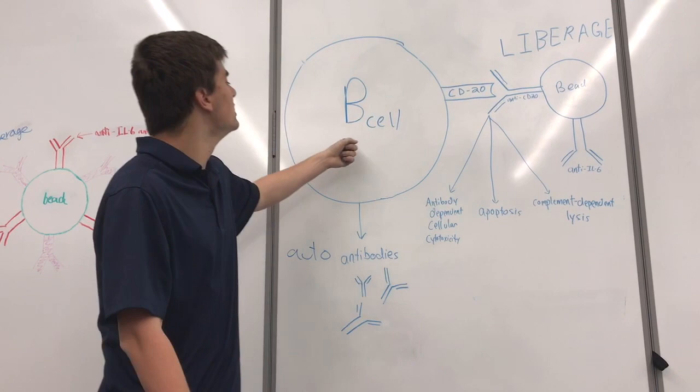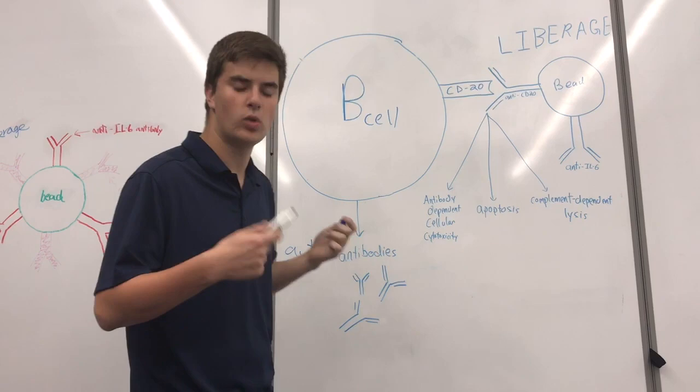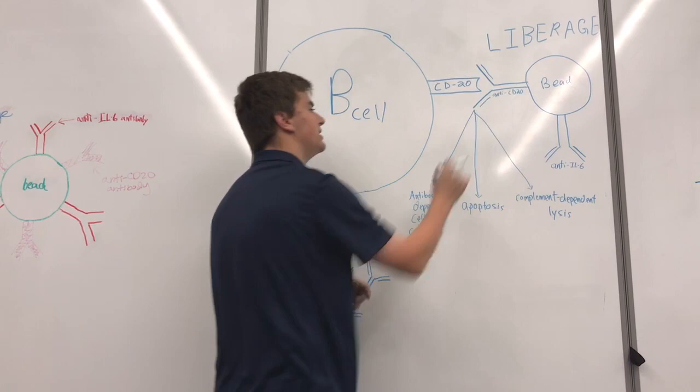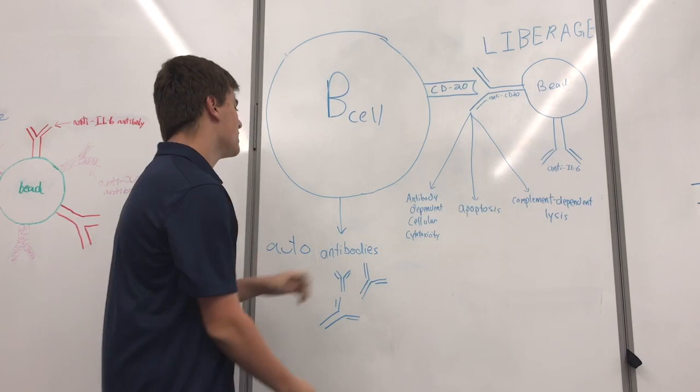B cells which produce autoantibodies also tend to have a higher expression of CD20 receptors. Now, normal B cells can have CD20 receptors as well, but B cells which produce autoantibodies have a slightly higher expression of them.